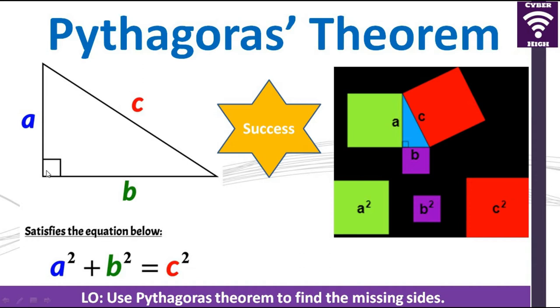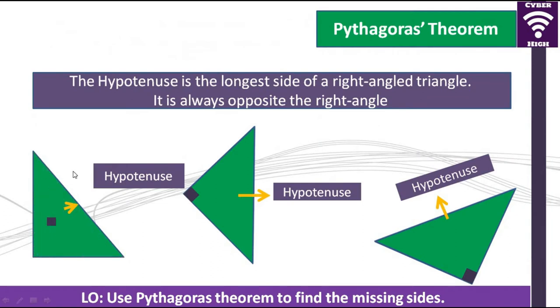For us to know how this theorem works, it is important to understand what we call the hypotenuse of the right angle triangle. When you have a right angle triangle, the longest side of the triangle is called the hypotenuse.